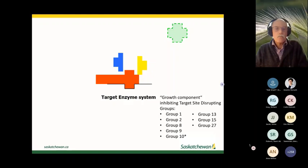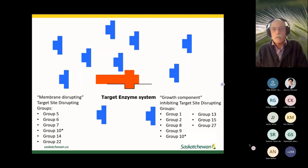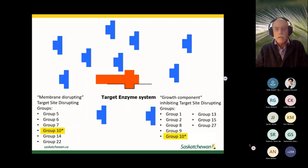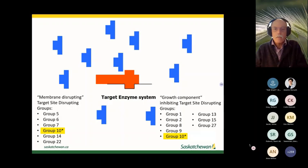Those are all the groups we have as far as resistance goes. Another thing that can happen is a toxic element backs up within the system, creating a membrane-disrupting effect. Group 10, or glufosinate, is a glutamine synthase inhibitor — it prevents production of essential growth components in the glutamine pathway and also backs up ammonia within the cell, which attacks cell membranes.